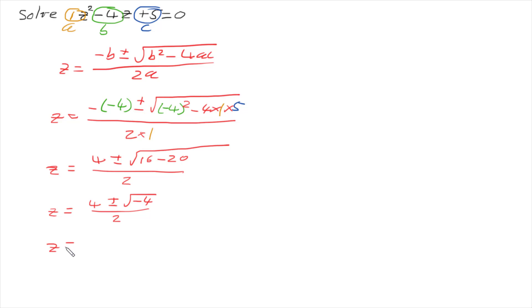So z is going to be 4 plus or minus the square root of negative 4 is, of course, 2i all over 2.